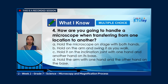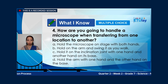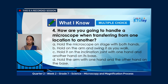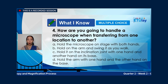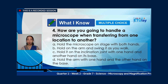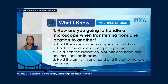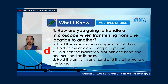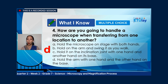Number four: how are you going to handle a microscope when transferring from one location to another? A, hold the microscope on the stage with both hands; B, hold on the arm and swing it as you walk; C, hold it on the inclination joint with one hand and another hand on its base; or D, hold the arm with one hand and the other hand on the base? The correct answer is letter D — hold the arm with one hand and your other hand holding the base.